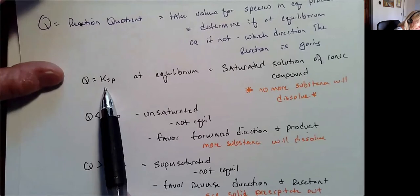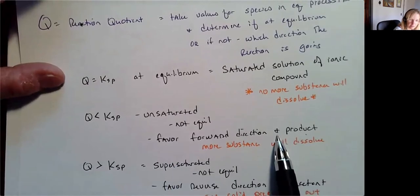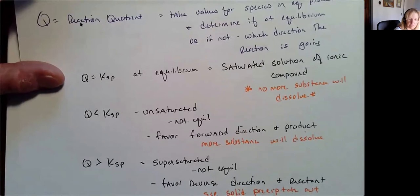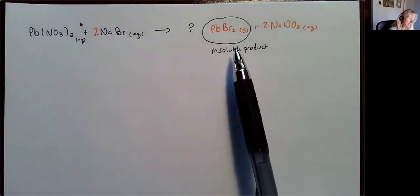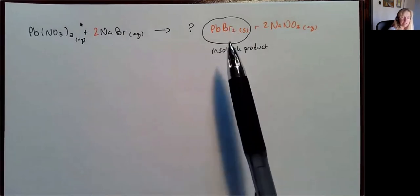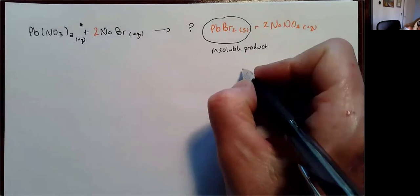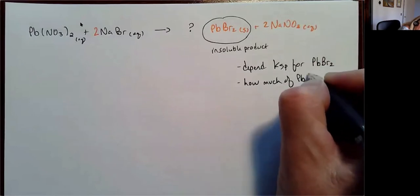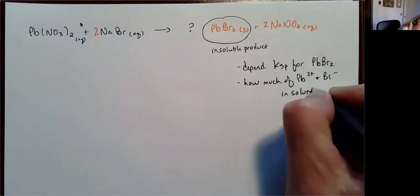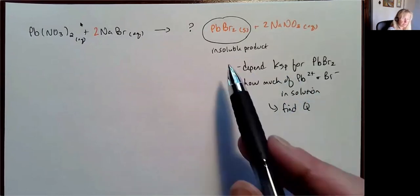If Q equals Ksp, I'm at equilibrium. If Q is less than Ksp, then I'm unsaturated and I'm not going to see any solid. If it's greater, then I'm supersaturated and that's where I'm going to see that precipitate form. Just because I have a solution of lead nitrate and mix it with sodium bromide doesn't necessarily mean I'm going to see a solid form — it depends on how much of these I have present and the Ksp for PbBr₂, how much lead and bromide ions are in solution. I compare Q to Ksp and that tells me whether this is going to precipitate or not.